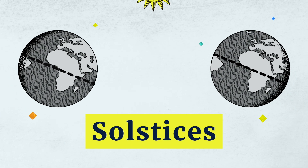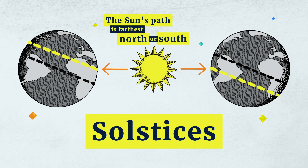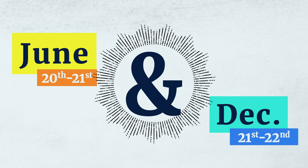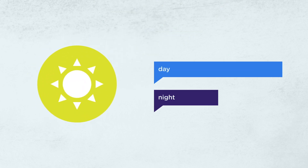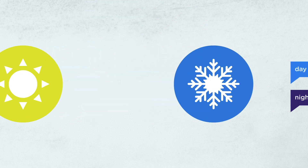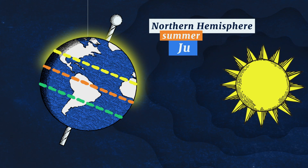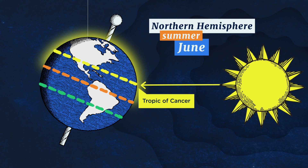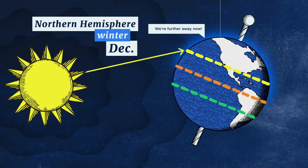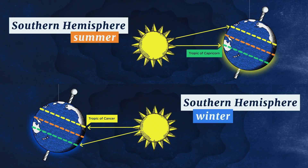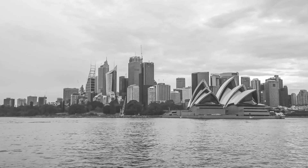Solstices designate the point where the Sun's path in the sky is the farthest north or south from the equator, which occurs around the 20th and 21st of June and the 21st and 22nd of December. The summer solstice marks the beginning of summer and is the longest day of the year, just as the winter solstice marks the beginning of winter and is the shortest day of the year. Which solstice happens on which day depends on the hemisphere you live in. In the northern hemisphere, summer starts in June when the Sun is beaming directly over the Tropic of Cancer, while winter starts in December when the Sun shines down on the Tropic of Capricorn. This is flipped for the southern hemisphere, which is why Australians associate the new year with summer fun.